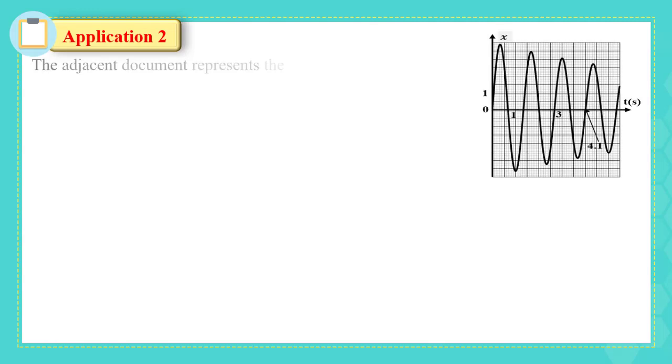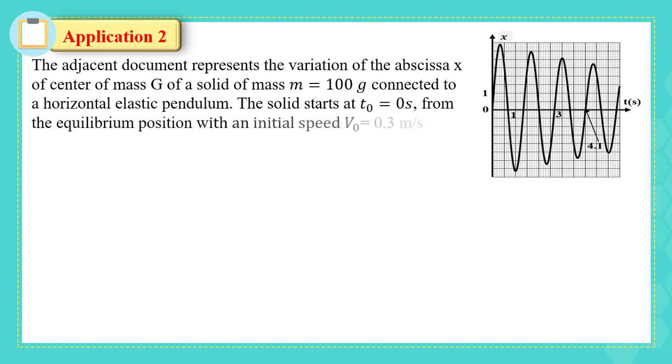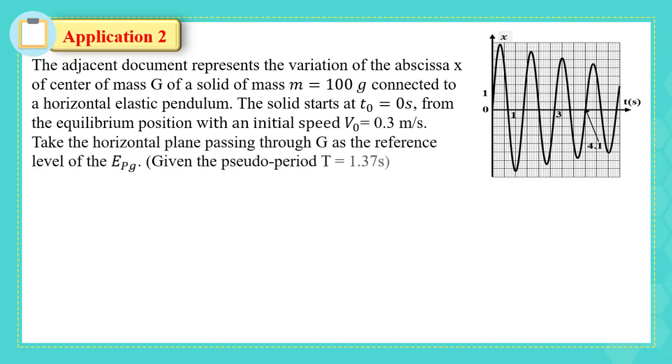Let's solve this application and end with this lesson. The adjacent document represents the variation of the abscissa X of the center of mass G of a solid of mass M equals to 100 grams connected to a horizontal elastic pendulum. The solid starts at T0 equals to 0 seconds from the equilibrium position with an initial speed V0 equals to 0.3 meters per second. Take the horizontal plane passing through G as the reference level of the gravitational potential energy and the pseudo period as 1.37 seconds.